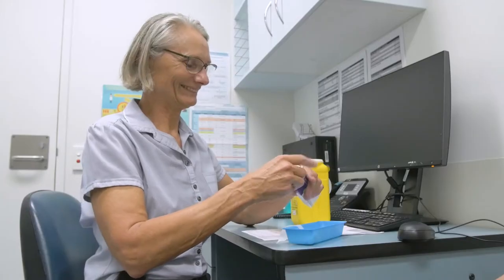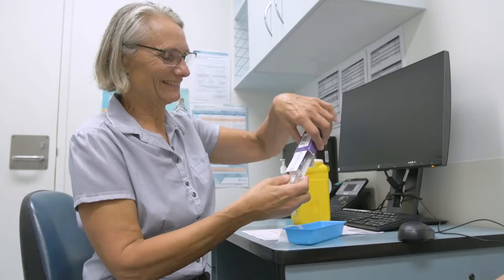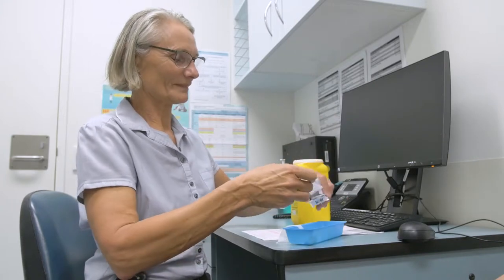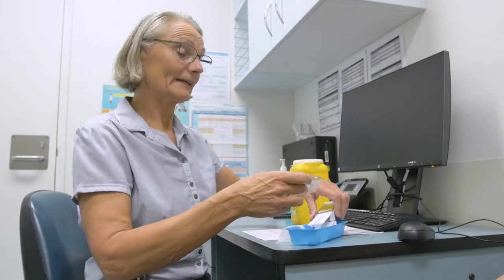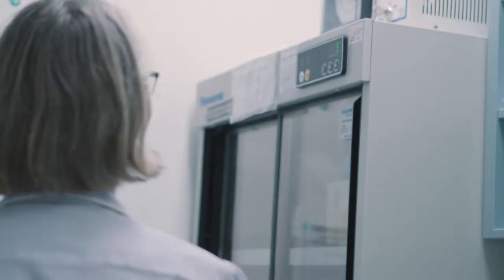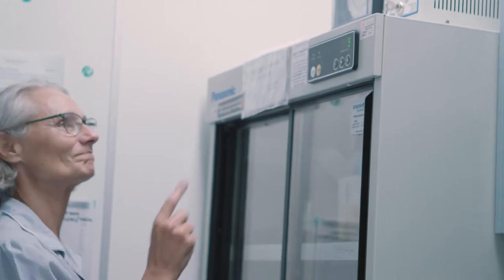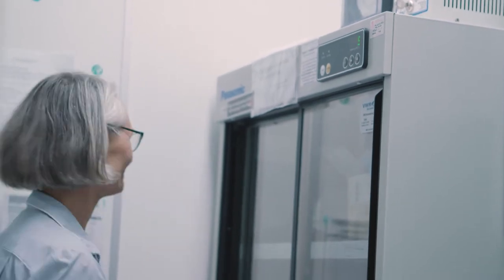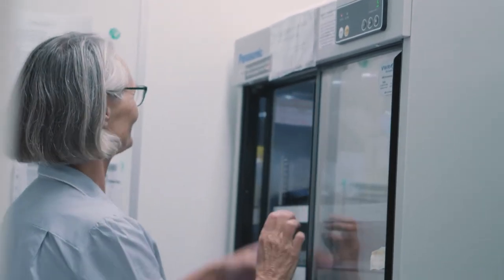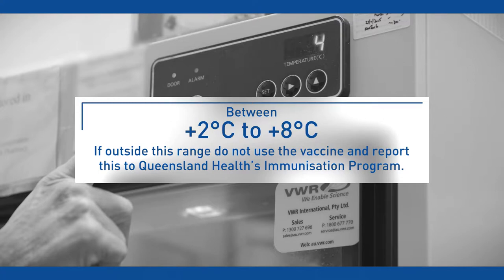For each injection, use a new sterile disposable syringe and needle. Before using any vaccine, check the fridge temperature to ensure the vaccine has been stored between two to eight degrees Celsius.